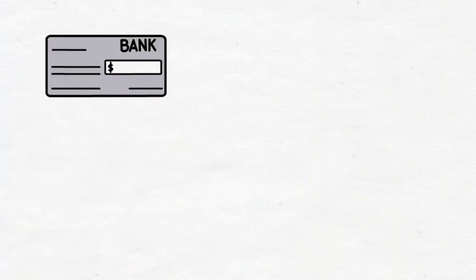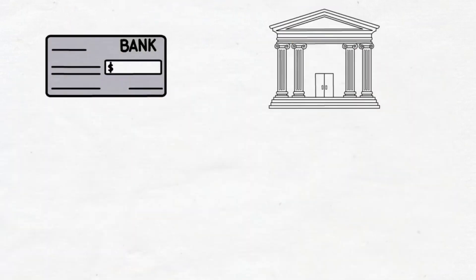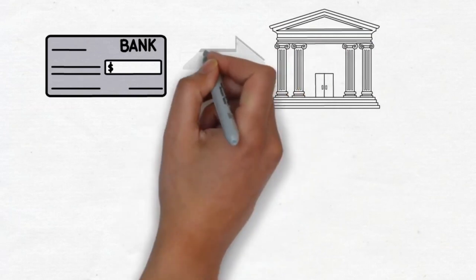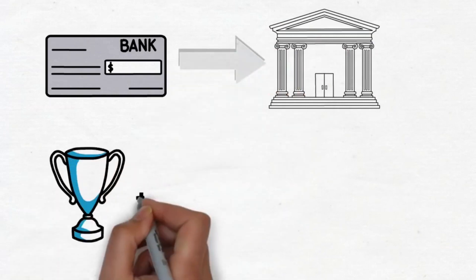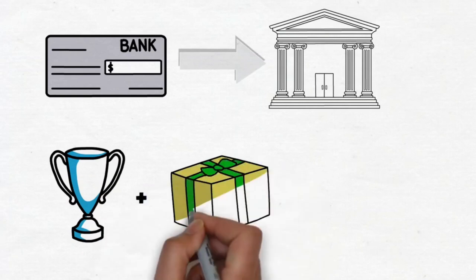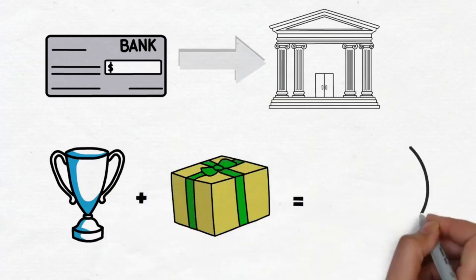Automating the deposit of a portion of each paycheck into your savings accounts is a wonderful approach to assure regular savings. Putting money aside when you get a bonus, increase, or even Christmas presents might help you accumulate wealth faster.